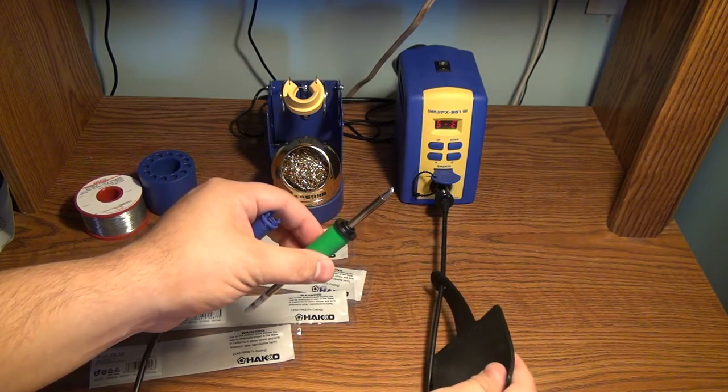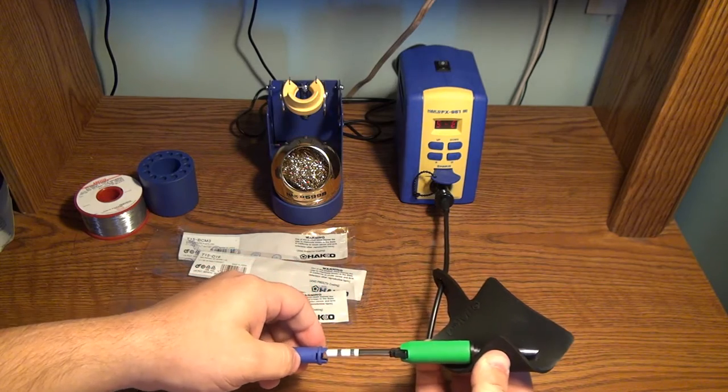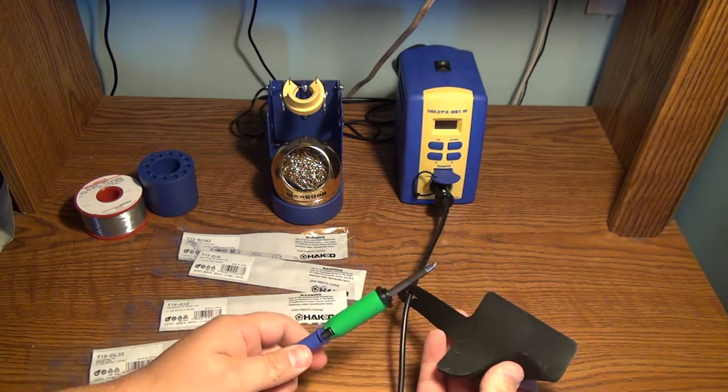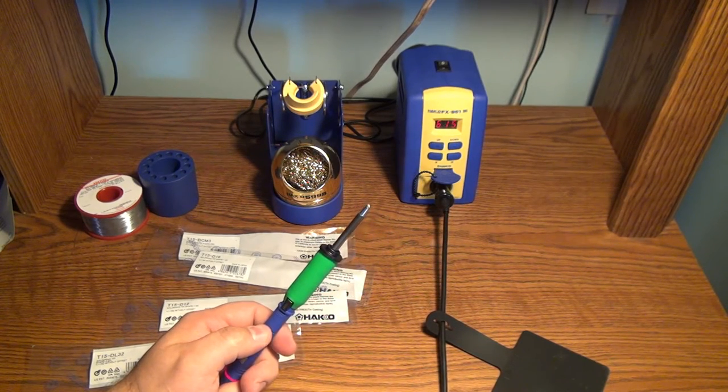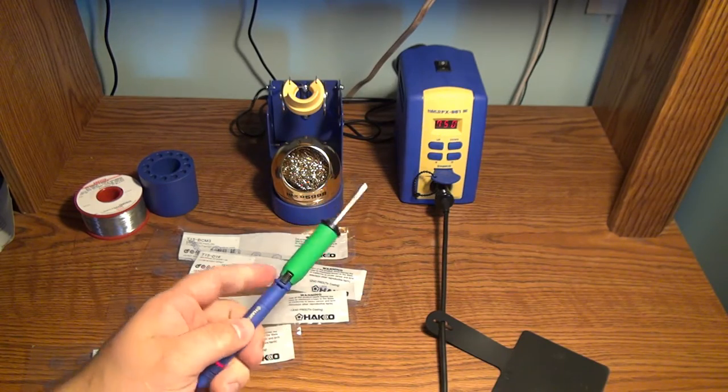You can pull it out and the station will tell you that, hey, we seem to be missing a tip here. Then you can use this to go ahead and swap the tip and put the tip back into the station. And there you go—the station recognized that there's a good tip that's inserted and the tip is ready to go.